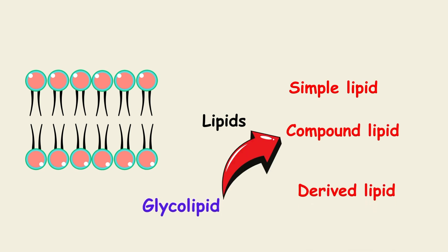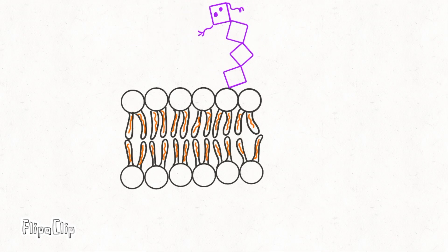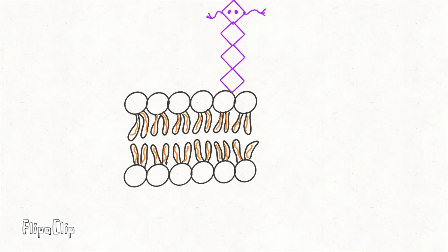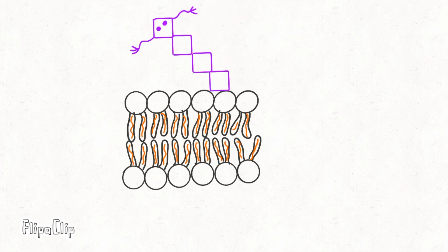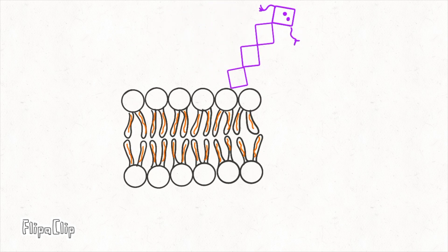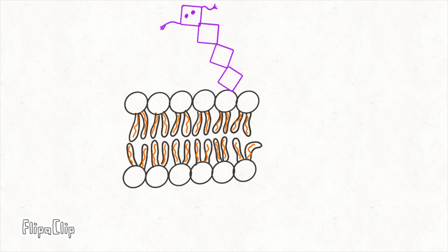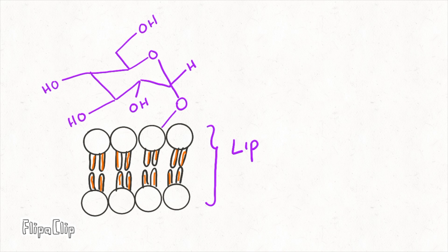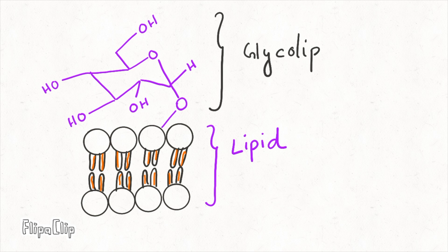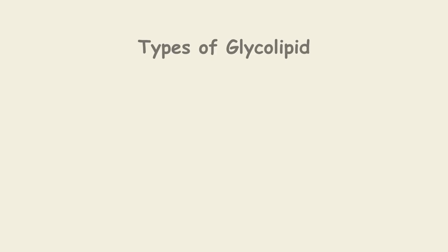Glycolipid is a type of compound lipid. The structure of glycolipid is the combination of carbohydrates with simple lipid. It has nitrogen and no phosphoric acid. Glucose or galactose are attached to the lipid. When galactose is attached it is called galactolipid.